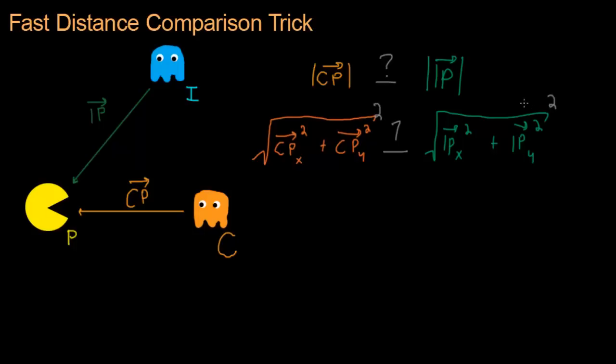And then these squares and square roots will cancel out. And that will leave us with the X component of the vector CP squared, plus the Y component of the vector CP squared, which is either bigger than, smaller than, we don't know. But we're about to figure it out. And then the X component of the vector IP squared, and the Y component of the vector IP squared.